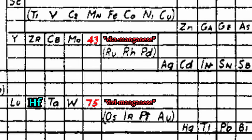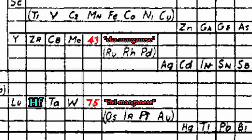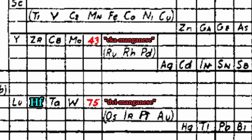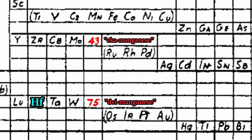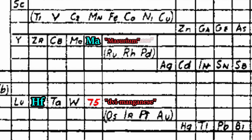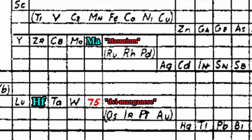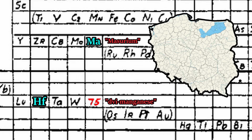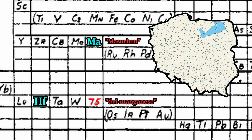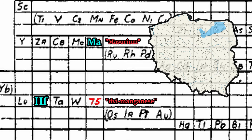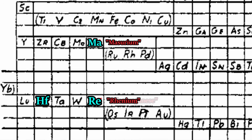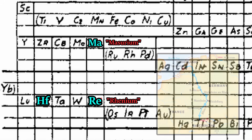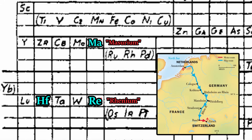The three of them gave the two elements new names, with element 43 being dubbed Masurium, after Masuria, where Walter's family originated. Element 75 was dubbed Rhenium, after the Rhine River, where Ida was from.